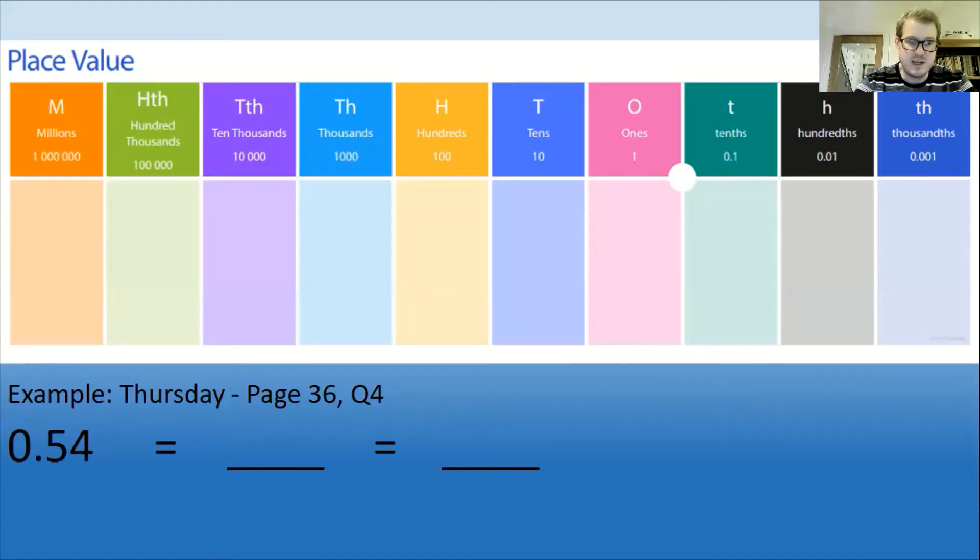It's about converting decimals into fractions. So question four asks you to convert 0.54 into a fraction. We're going to use the place value grid that we used last week which is up here and I think it helps sometimes just to put your number into the place value grid. That's where our decimal will be, and that makes it really clear there that we've got a five in the tenths column and a four in the hundredths column.